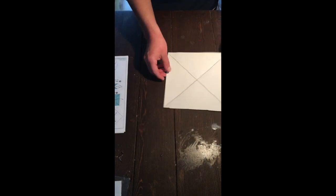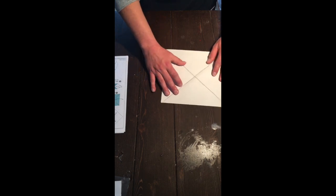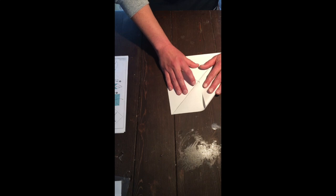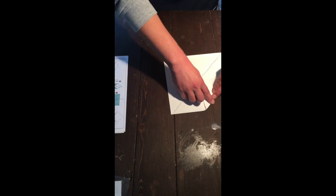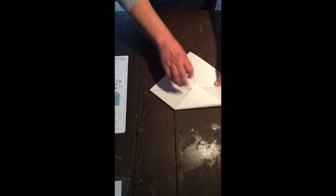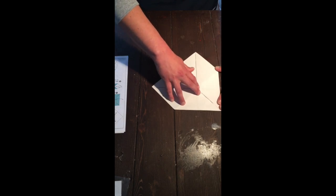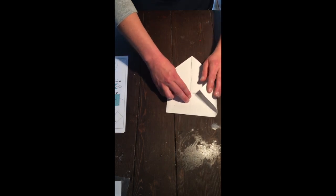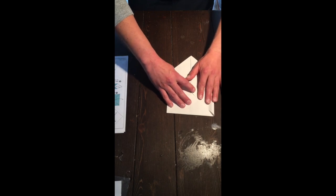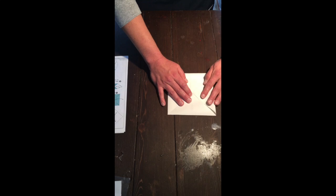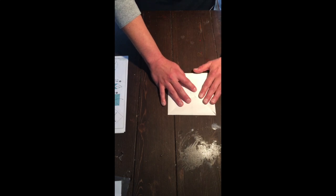Alright so now we have this nice square and what we're going to do is we're going to rotate it and look at it. And we're going to find one of the corners and we're bending one of the corners into the center of the cross we just made. And then we fold the next corner, fold that into the center, and so on, until we've folded all four corners.